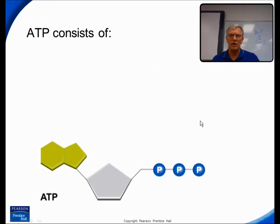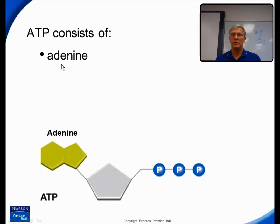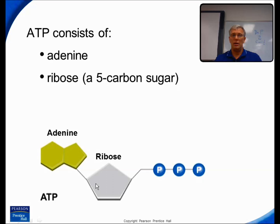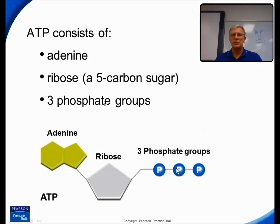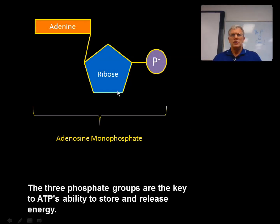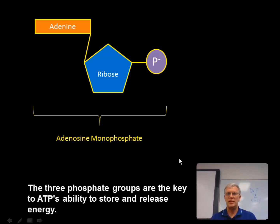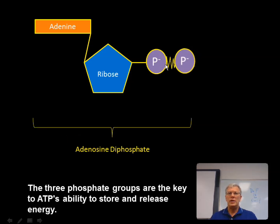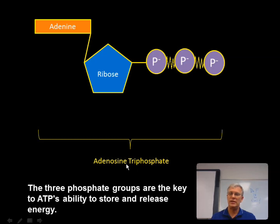Now ATP consists of three basic parts. It consists of an adenine molecule, which we saw when we looked at nucleotides, DNA and RNA. It has a ribose sugar molecule, which we saw in RNA. And it has three phosphate groups. If you took off these two phosphate groups, what you would have is an RNA nucleotide containing adenine, a sugar, a phosphate, and a base — called adenosine monophosphate, or AMP, with one phosphate. If we attach a phosphate group to AMP, we now have adenosine diphosphate, ADP. And if we attach a third phosphate, we now have adenosine triphosphate, ATP.